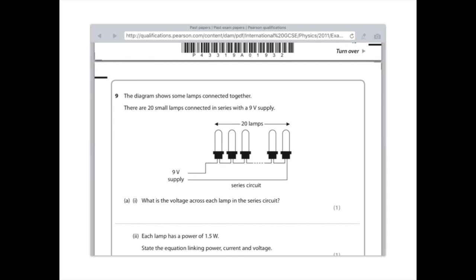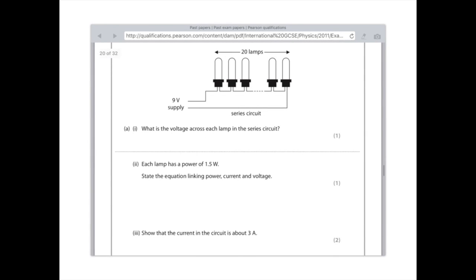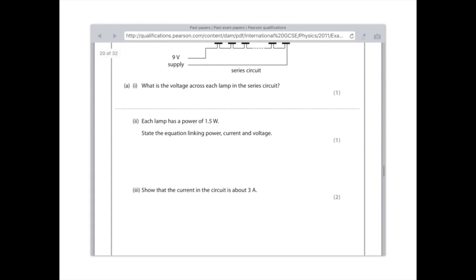Each lamp has a power of 1.5 watts. State the equation linking power, current, and voltage. So again, it's P = IV, so therefore power is current times voltage. Lots of people have asked me before why I put I as the symbol. It is I in the exam—if you put C they'll mark it wrong. That's actually due to historical reason: I stood for the intensity of the current. Anyway, show that the current in the circuit is about 3 amps.